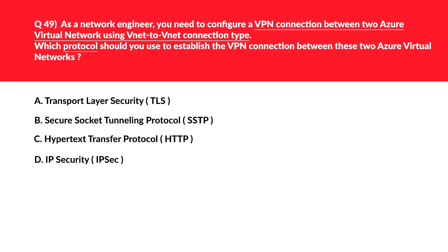This question is about VNet-to-VNet type connection. Let's first look at option A, that is TLS. TLS is used to perform encryption over TCP communication channels and cannot be used to set up a VNet-to-VNet VPN connection between two virtual networks as required by the question. Therefore it is an incorrect choice. Option B says Secure Socket Tunneling Protocol, or SSTP. SSTP is a TLS-based VPN protocol which can be used to establish a point-to-site VPN connection but cannot be used for VNet-to-VNet connection — again an incorrect choice.